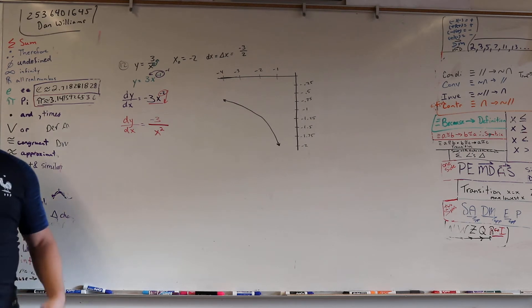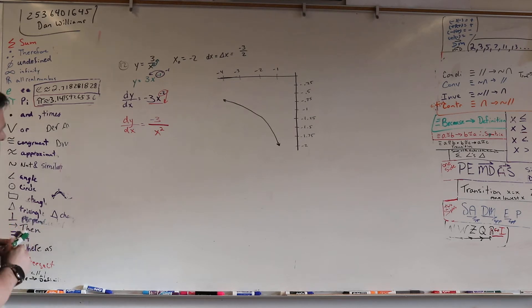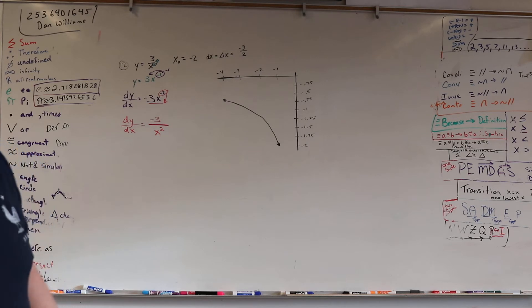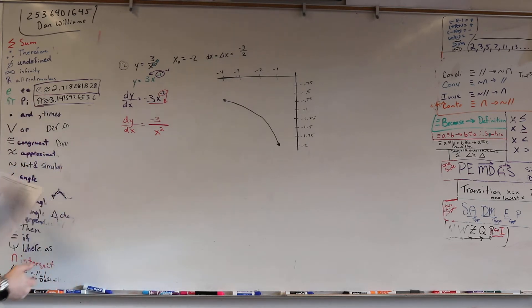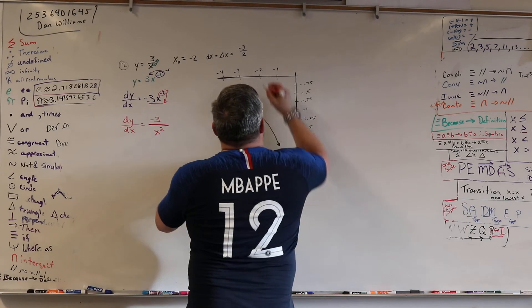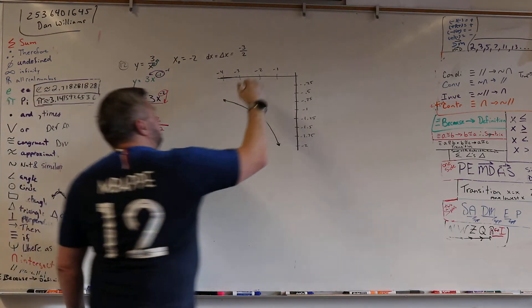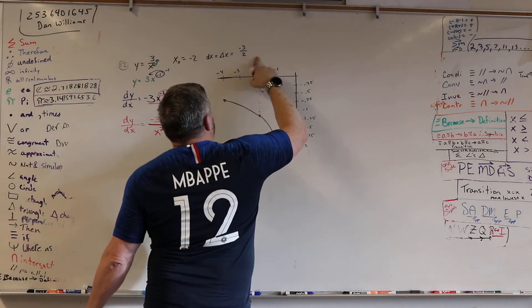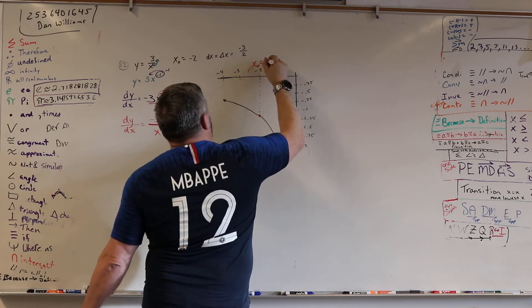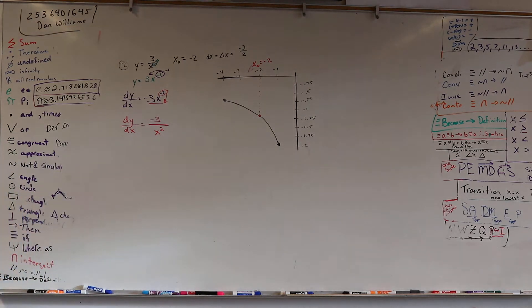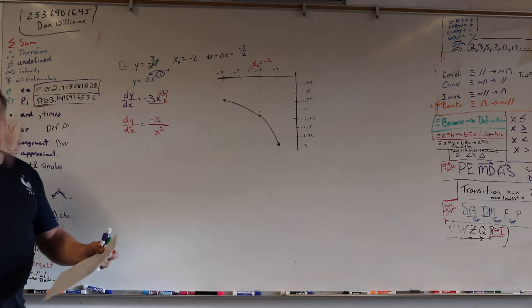Now we're able to figure out what our slope is, right? Almost — we need to know a point at which we're going to talk about the slope. Where's the point that we're talking about the slope? Negative 2. Yes, at x naught, right? So at this point right here. x naught equals negative 2.